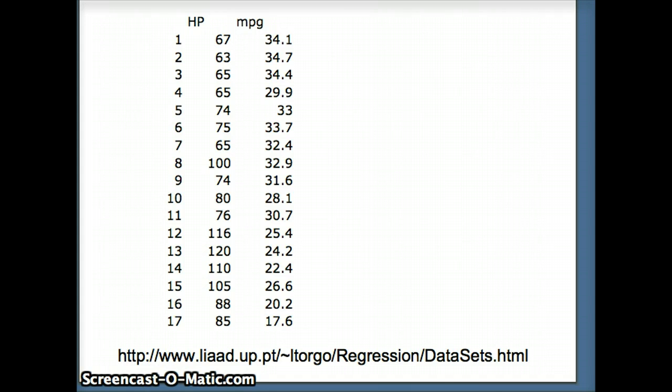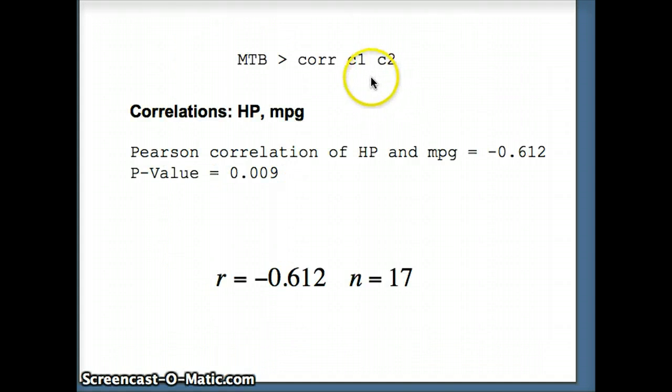So what are we going to do with this? We're going to go ahead and do a correlation. So we're going to say CORR, C1, C2. And you'll notice we get a correlation coefficient of negative 0.612.